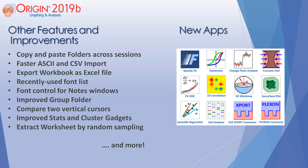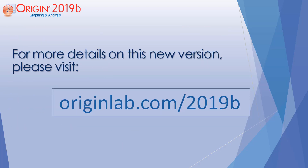Other features and improvements in Origin 2019b include: copy and paste folders across sessions, faster ASCII and CSV import, export workbook as Excel file, recently used font list, font control for Notes windows, improved group folder, compare two vertical cursors, improved stats and cluster gadgets, extract worksheet by random sampling, and several new apps available for free download. To learn more details about this new version, please visit originlab.com/2019b.